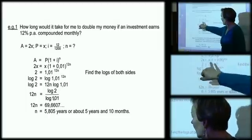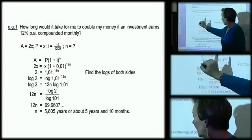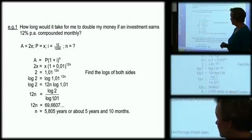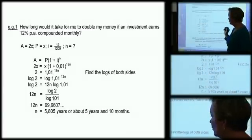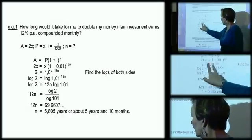So what we do, we fill that in, we divide A by P, simplify the bracket, and now this is a point where we bring in logs. So we have to find the logs of both sides, because if the numbers are equal, the logs are equal.